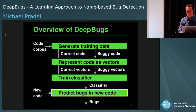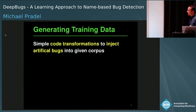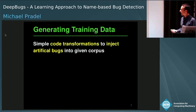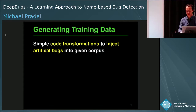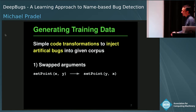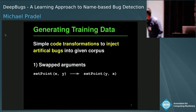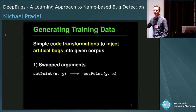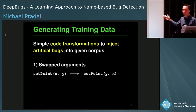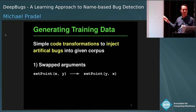The idea to generate training data is simple: we take an existing corpus of code and artificially inject bugs using simple code transformations very likely to lead to bugs. For swapped arguments, we take all function calls with at least two arguments and permute them — for example, just swapping the two. There's no formal guarantee that this yields incorrect code, but in most cases it does, and machine learning is pretty robust with respect to noise.